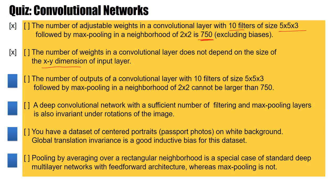Third claim: the number of outputs of a convolutional layer with 10 filters of size 5×5×3 followed by max pooling in a neighborhood of 2×2 cannot be larger than 750 — 750 was the number in the first question. If you think it is correct, raise your hand now. And no, this is not correct.